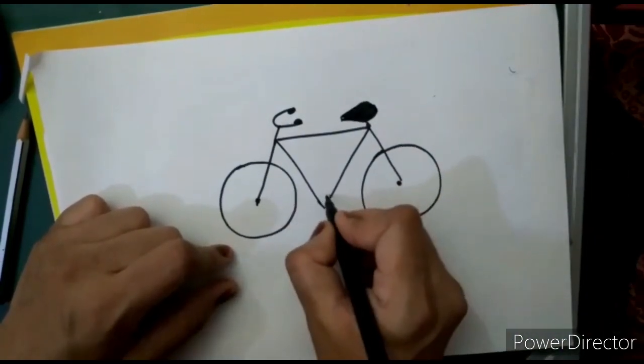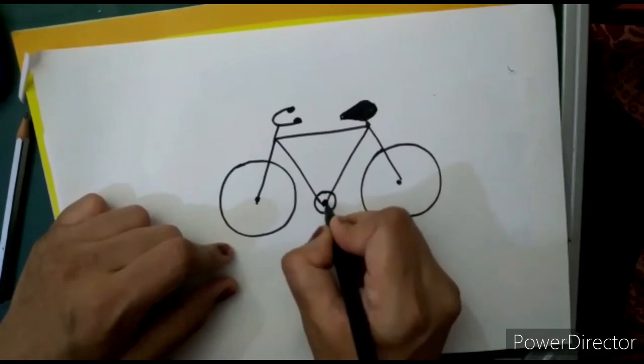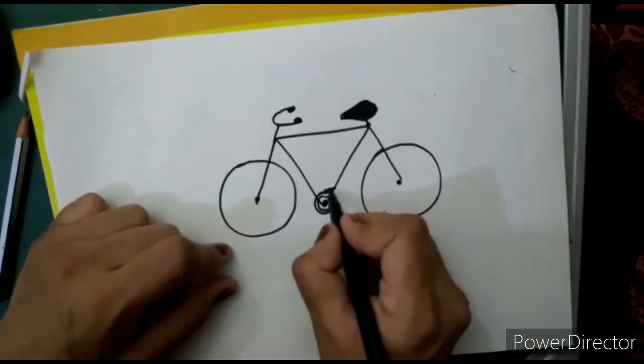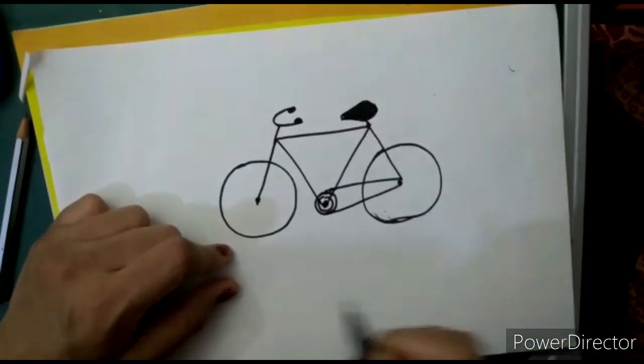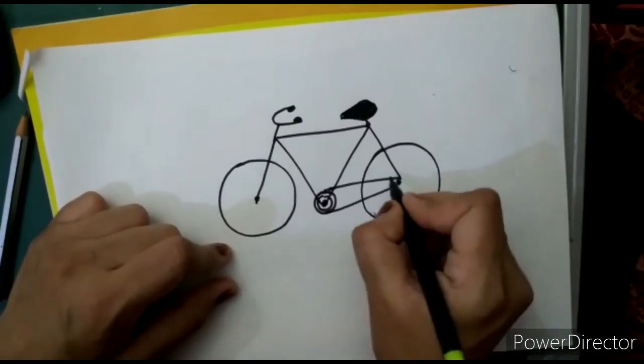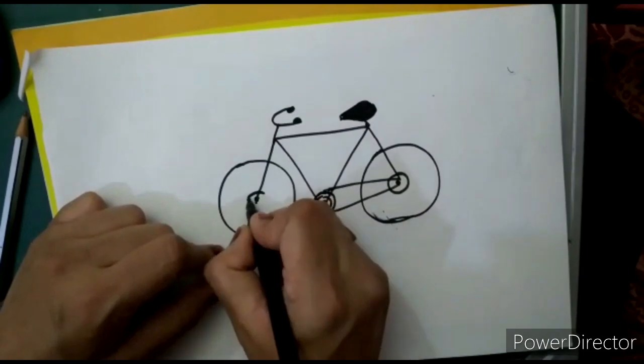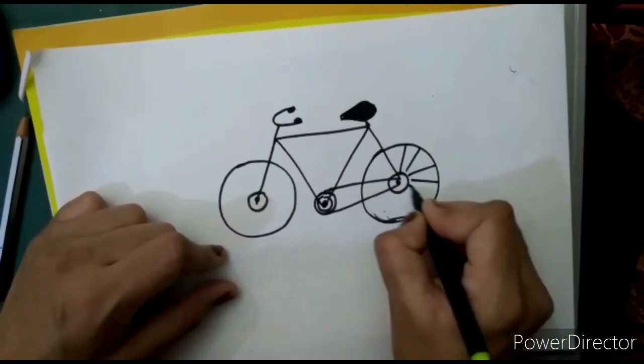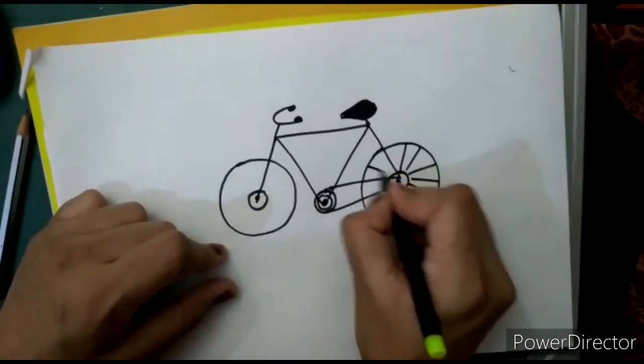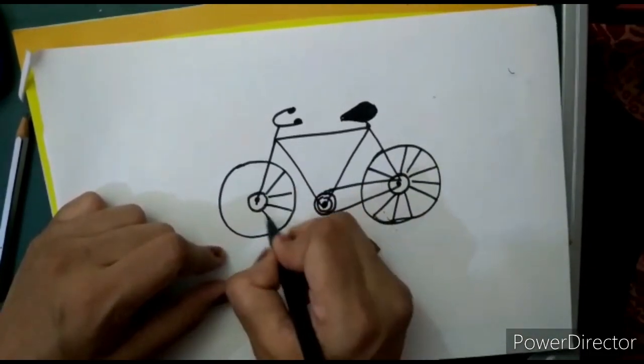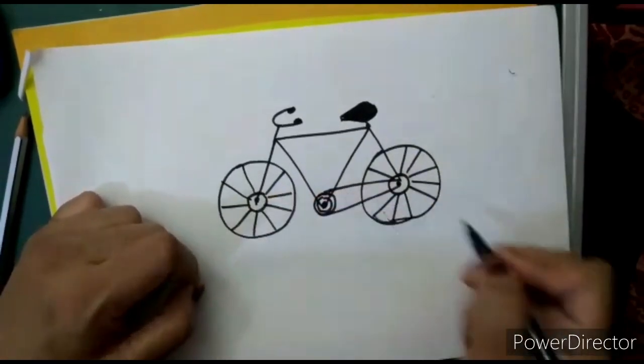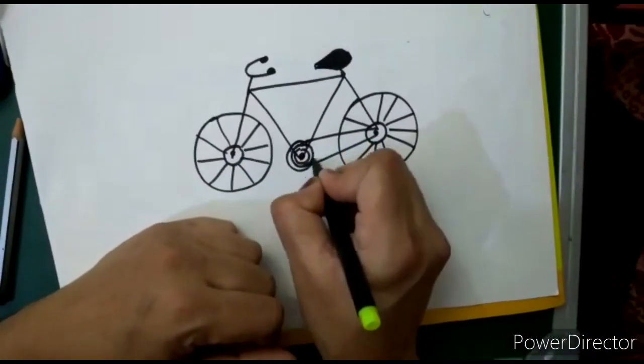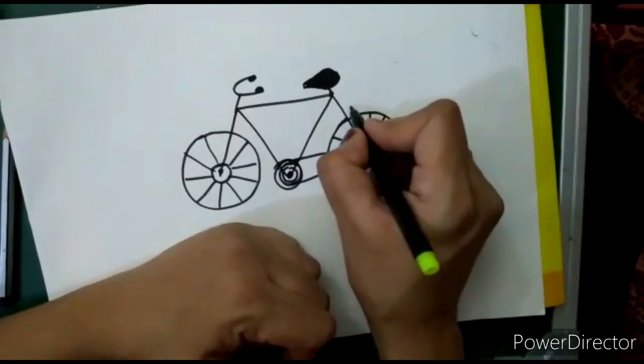Now I am going to draw a circle here, and again a circle. Then join these two parts like this and draw a circle here, draw a circle here also. And now we will do slanting lines here. So friends, our cycle is almost ready. Now you can draw a carriage part here.